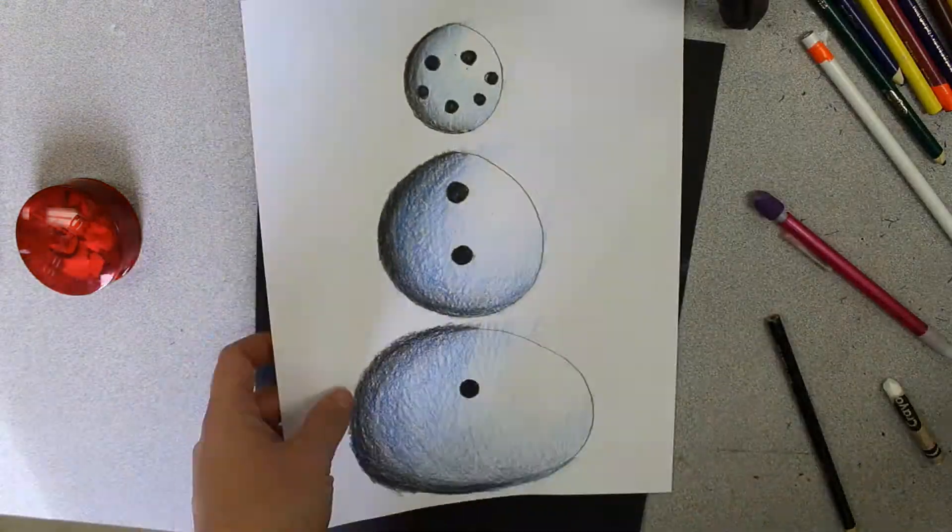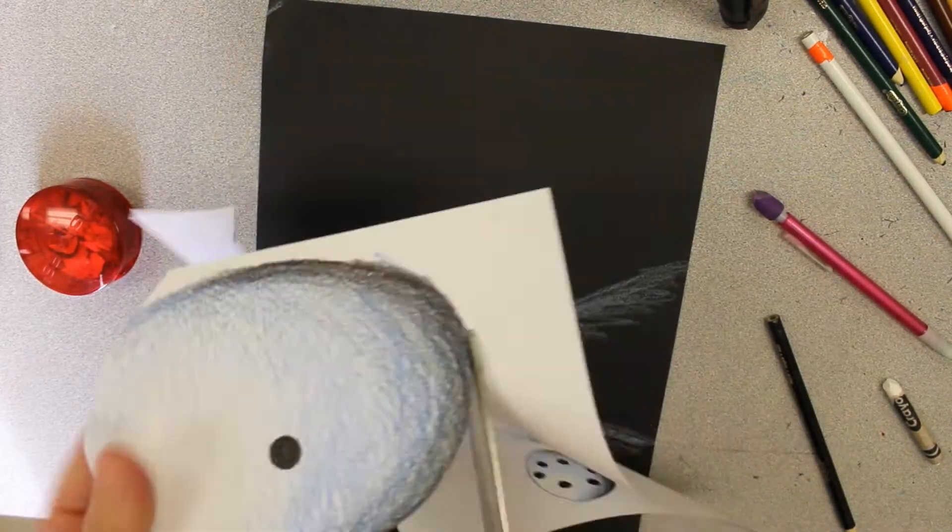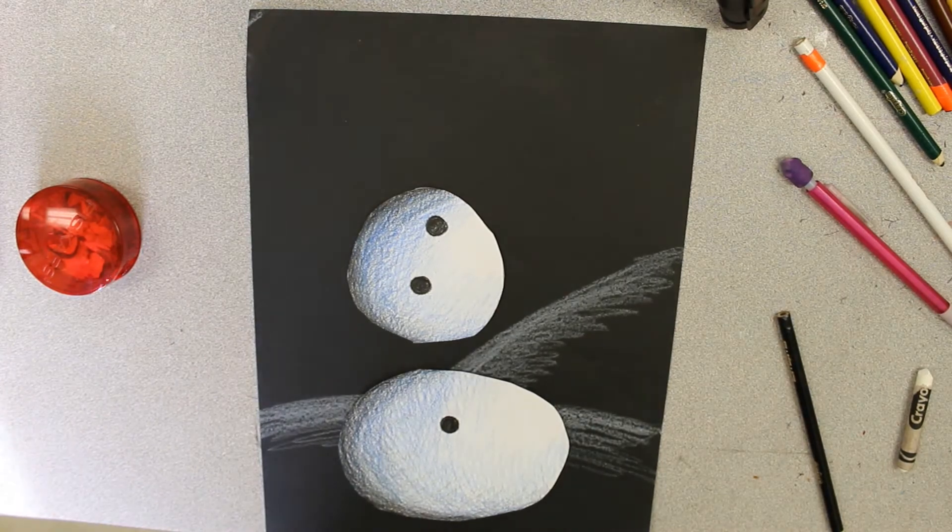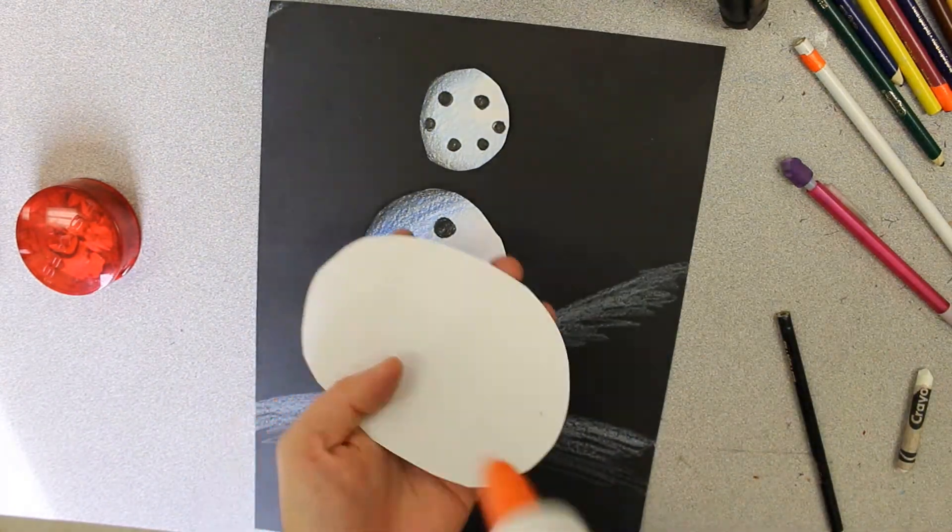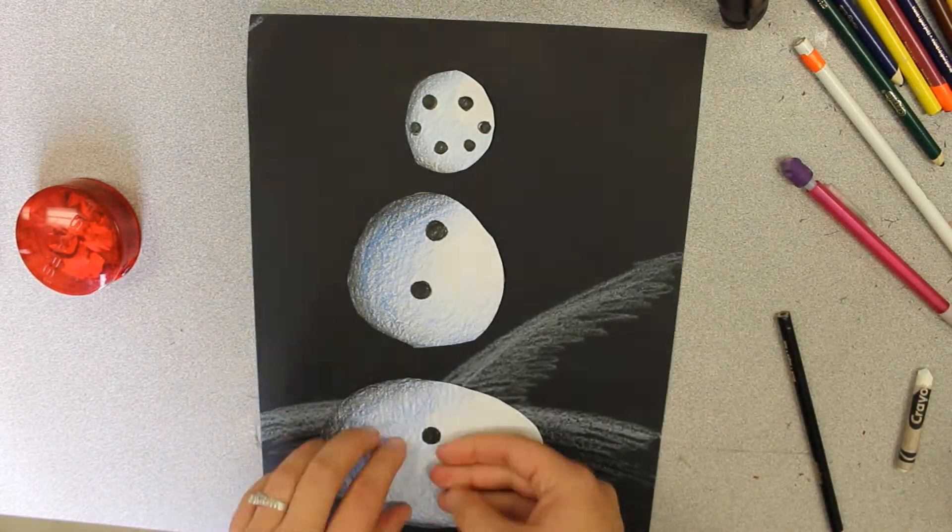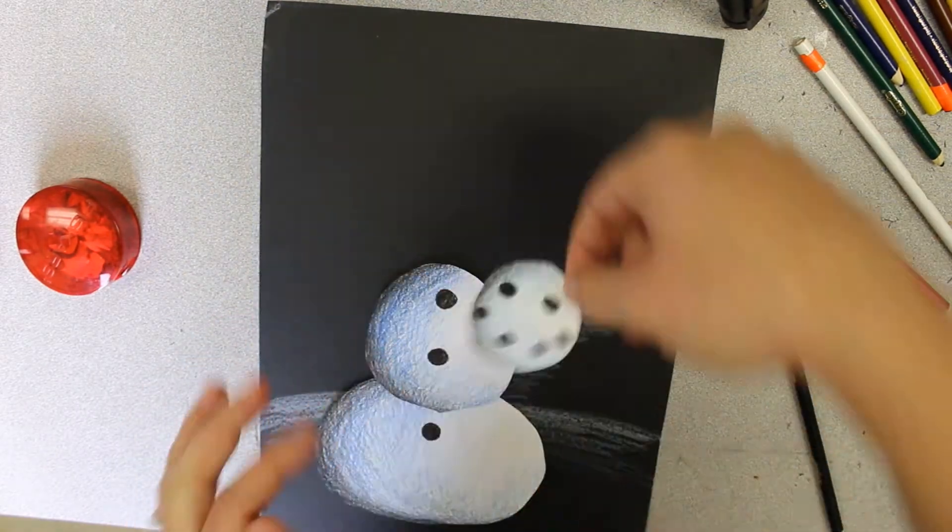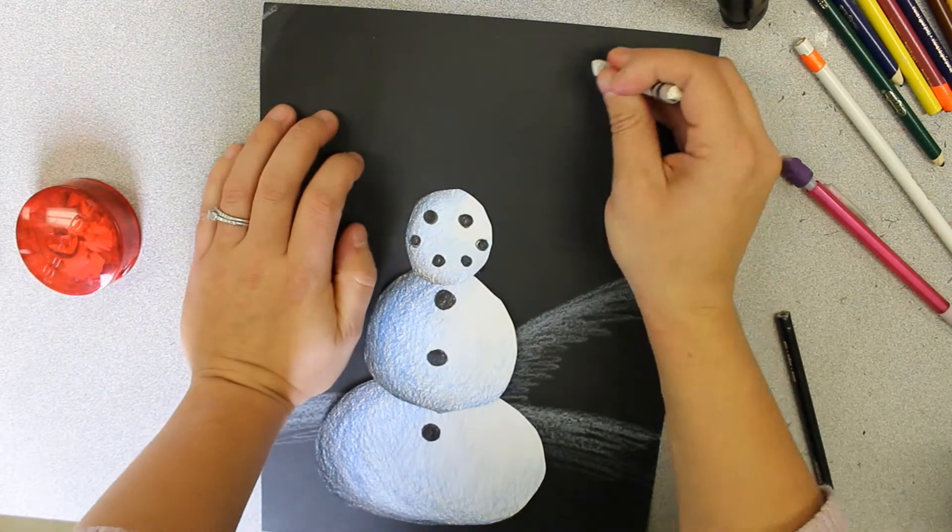Once you're done coloring that all in, then we're going to take our snowman and we're going to cut him out and then we're going to put him together on the paper. Remember, if you're using bottled glue you don't need a ton of glue. Just a few dots will be enough to glue this all down.